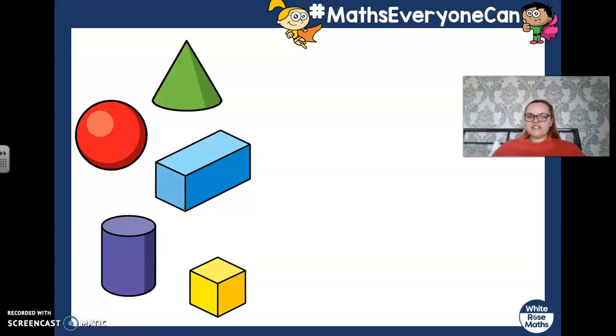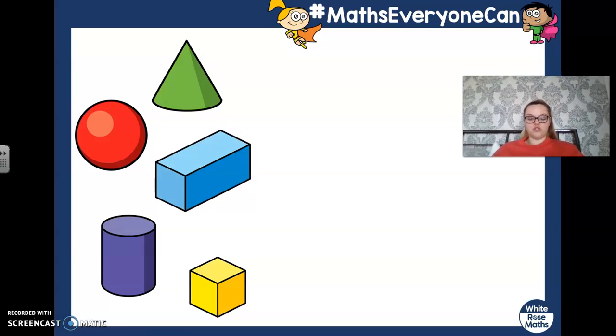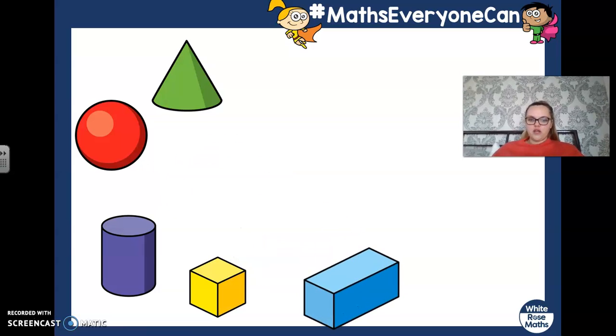So this time, I'm going to try with the cuboid at the bottom. If I put the cuboid at the bottom and I put something else on the top, do you think it will balance? Do you think my tower will build and it won't fall off?